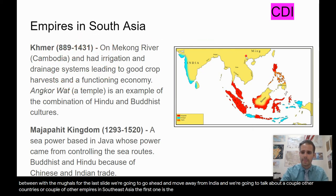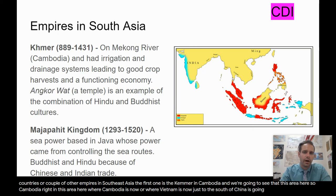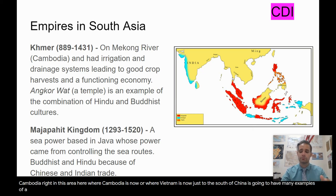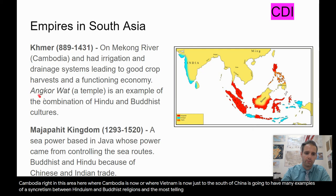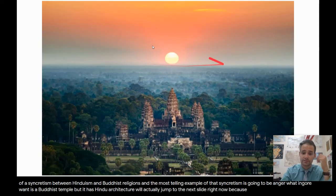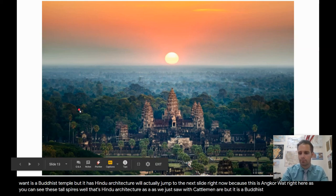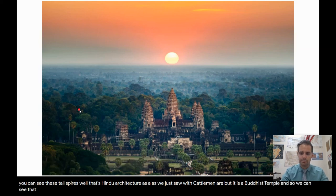The first one is the Khmer in Cambodia — this area just to the south of China, where Cambodia and Vietnam are now — which is going to have many examples of syncretism between Hinduism and Buddhism. The most telling example is Angkor Wat: a Buddhist temple, but with Hindu architecture. As you can see, these tall spires are Hindu architecture, as we just saw with the Qutb Minar, but it is a Buddhist temple. So this is a clear example of syncretism, and in this part of the world, both Hinduism and Buddhism take a big hold in the hearts and minds of the people.